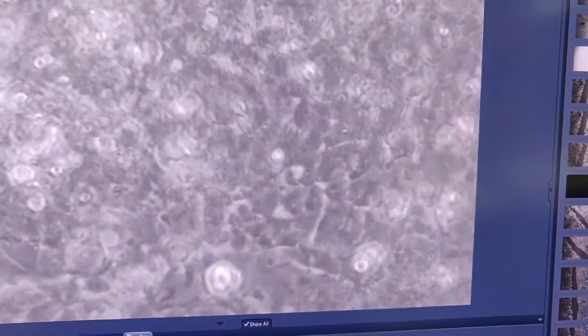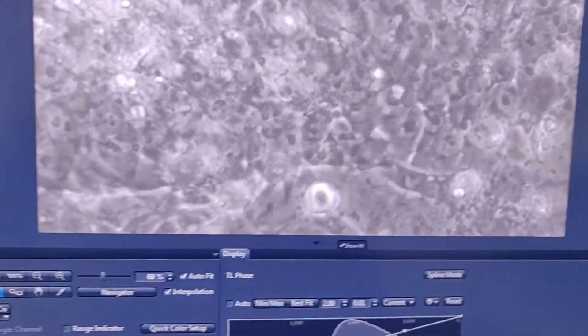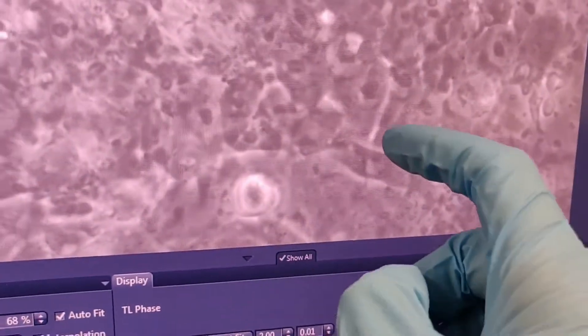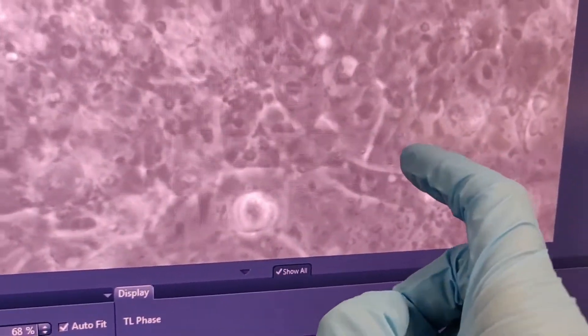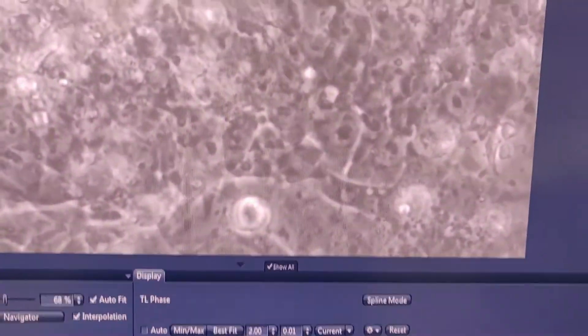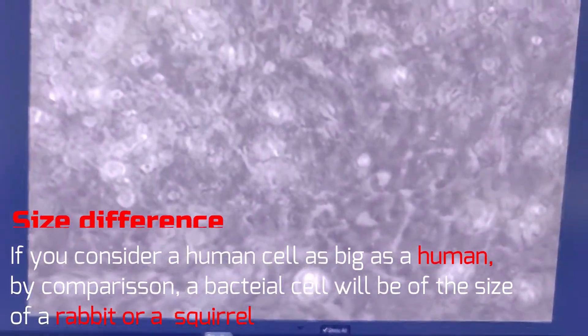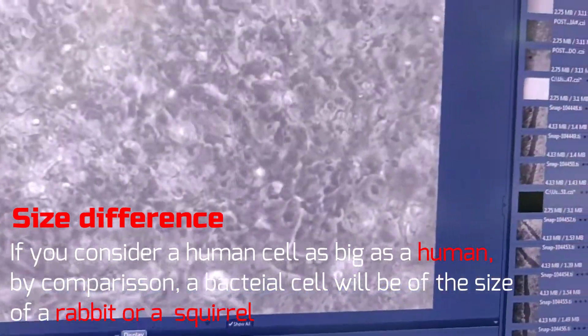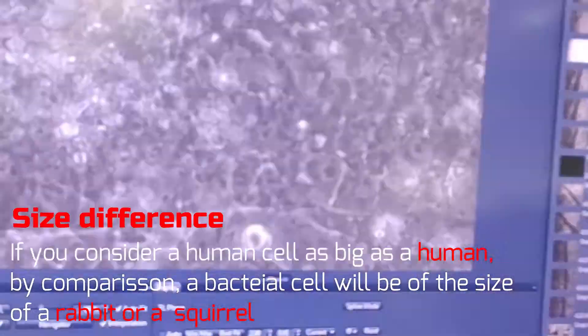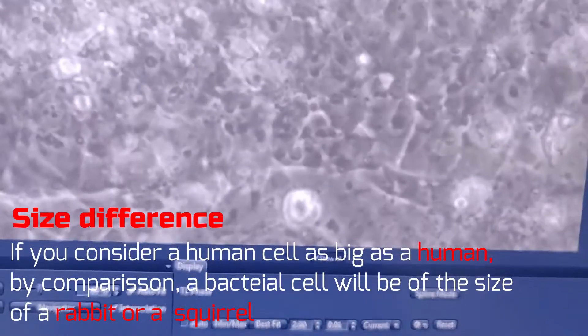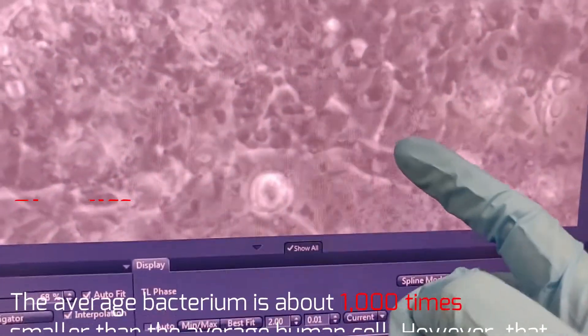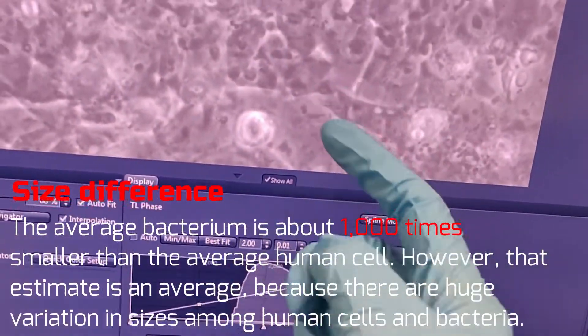But look how tiny those bacteria are compared to cells. Just for a perspective. So, if you can see these all, because these cells are very dense, there are two layers of cells which makes it basically difficult to see. This two is the best. So, you can see. Look, these all. These are one cell. So, these are very big. And one cell in various cells.